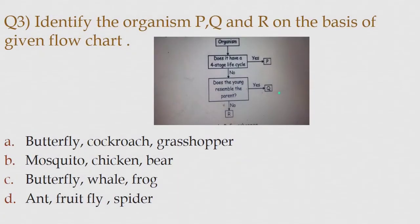Question 3. Identify the organisms P, Q and R on the basis of the given flowchart. Option A: Butterfly, cockroach, grasshopper.